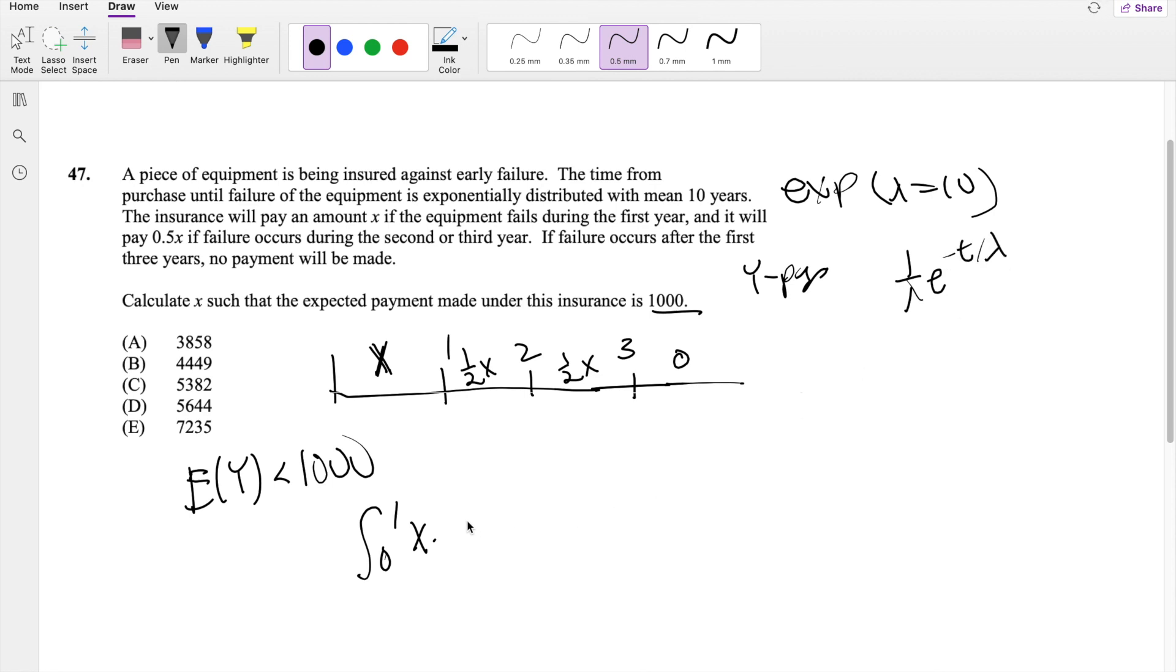So then this is equal to 1 over lambda, which is 10, E to the negative T over lambda, which is 10, DT. We're integrating with respect to T because X is just a constant.